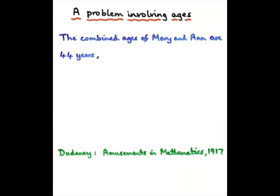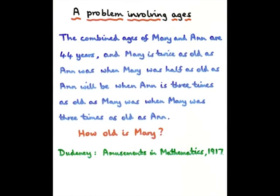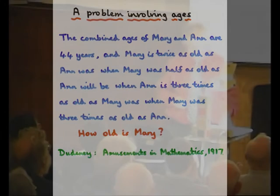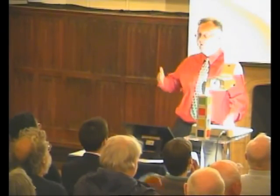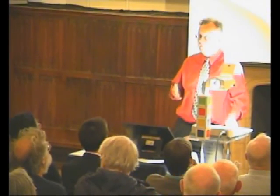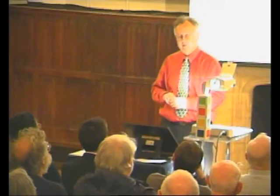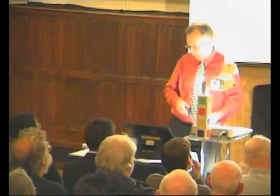You want to find out how old they are. You're told that Mary is twice as old as Anne was when Mary was half as old as Anne will be, when Anne is three times as old as Mary was, when Mary was three times as old as Anne. So you're given some information and all you have to find out is how old is Mary. It's in the handout — you can try it for yourself. Over the years there have been lots of different puzzles involving ages, and in fact there's a whole section in Dudeney's book about such problems.